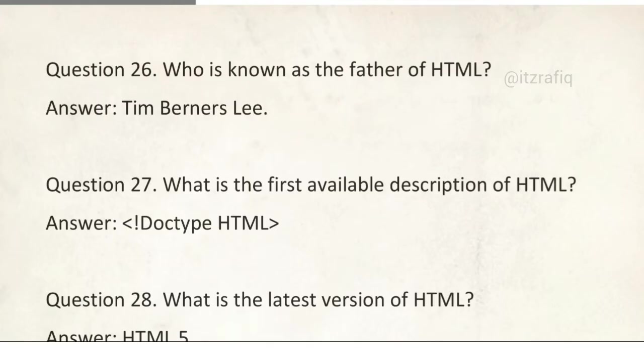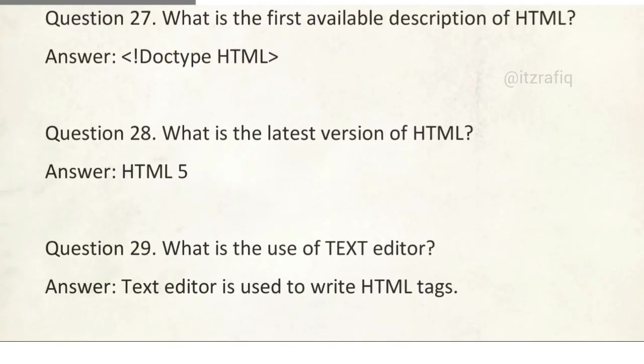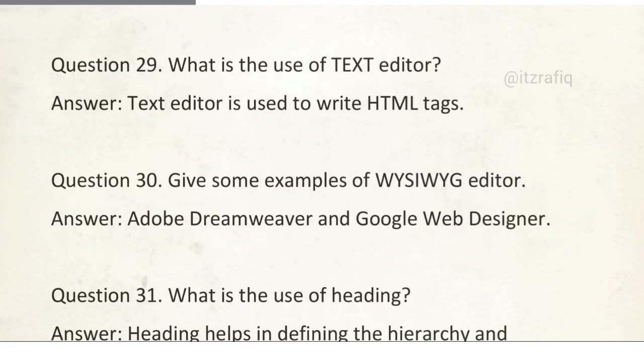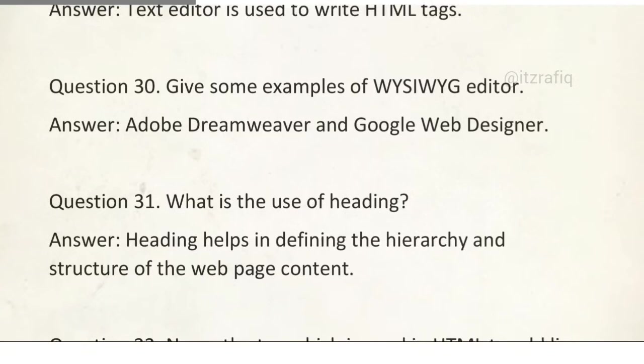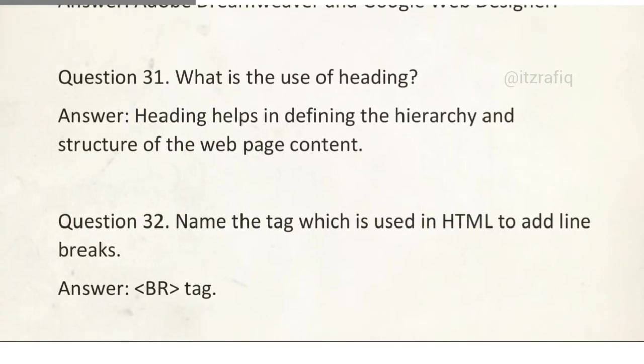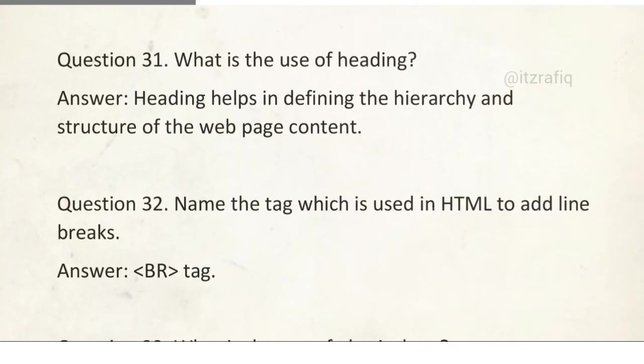Number 27: What is the first available description of HTML? It is doctype HTML. Number 28: What is the latest version of HTML? It is HTML5. Question 29: What is the use of text editor? It is used to write HTML tags or codes. Number 30: Give some examples of what you see is what you get editor. It is Adobe Dreamweaver and Google Web Designer. Question 31: What is the use of heading? Heading helps in defining the hierarchy and structure of the web page content. Number 32: Name the tag which is used in HTML to add line break. It is BR tag and it is an empty tag.